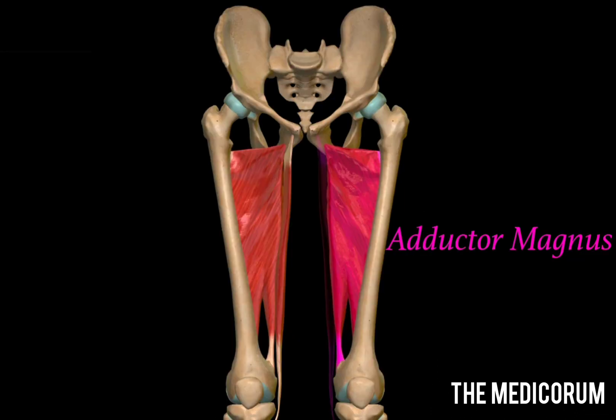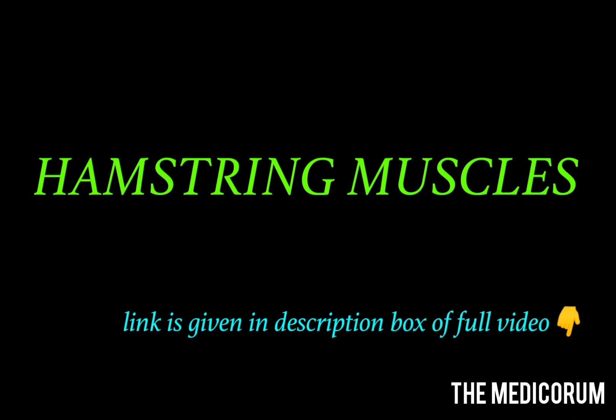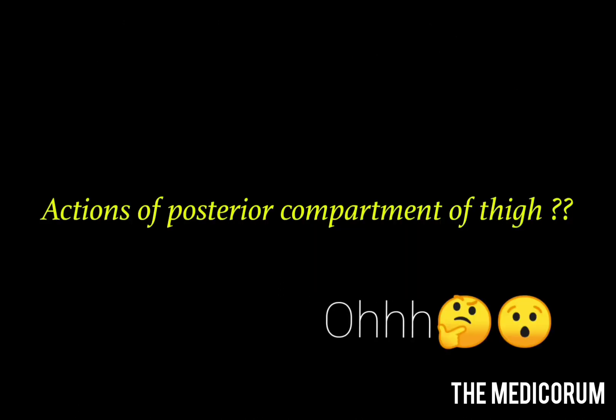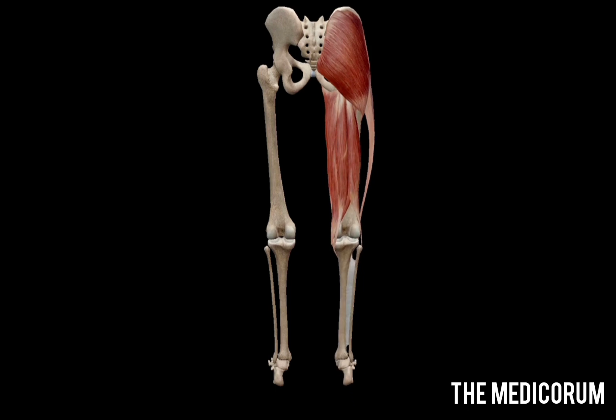Note that adductor magnus is also included in the posterior compartment of the thigh. The muscles included in the hamstring group are adductor magnus (especially its hamstring part), long head of biceps femoris, semitendinosus, and semimembranosus. The chief actions of the posterior compartment are extension of the hip and flexion of the knee.